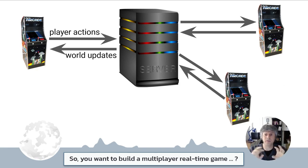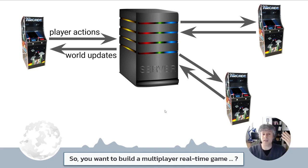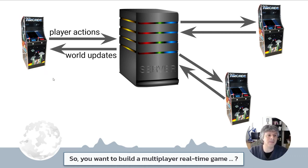The server receives this information from all clients, does some things — like updating its internal state, performing calculations, validating actions — and it sends out to every connected client updates on what happened in the shared game world, so that every client is able to update its knowledge of the world and refresh the screen. In this sketch, there is a central server, and the clients are represented as old-time arcade machines. If you don't know what those are, congratulations — you are young.